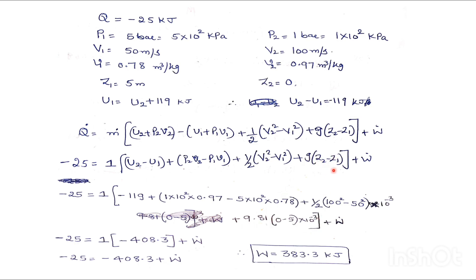We have done here plus G is 9.81 into Z2 is 0 minus Z1. We have converted it into 10 to the power minus 3 plus W dot here. So minus 25, we will simplify this equation. We are going to get minus 408.3 plus W dot.